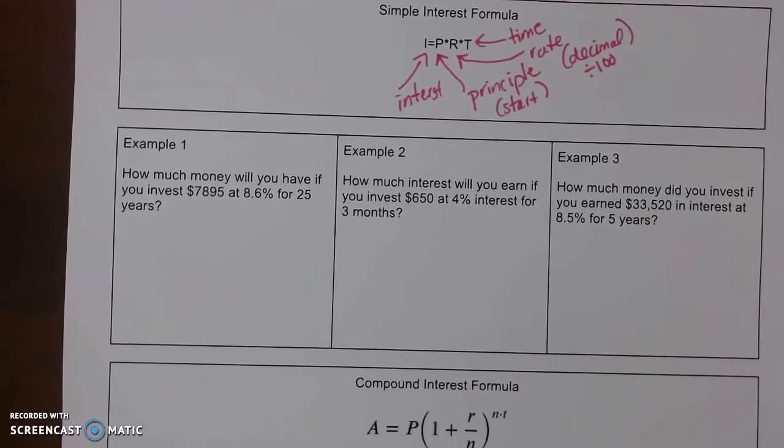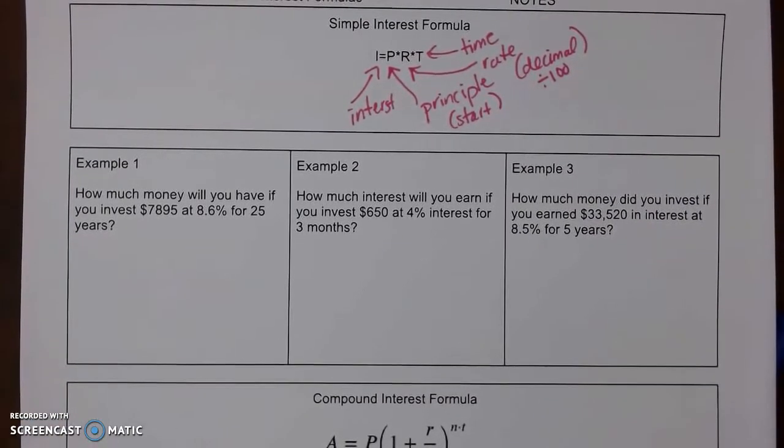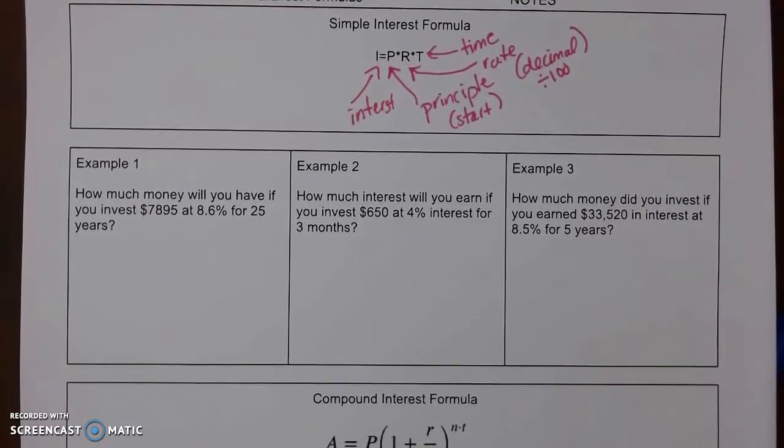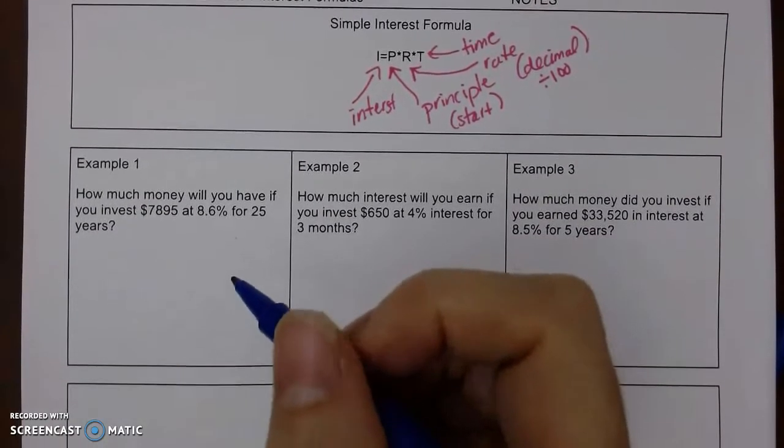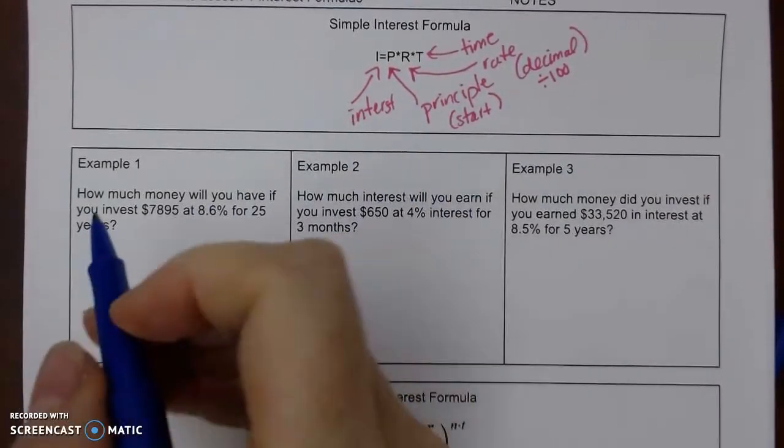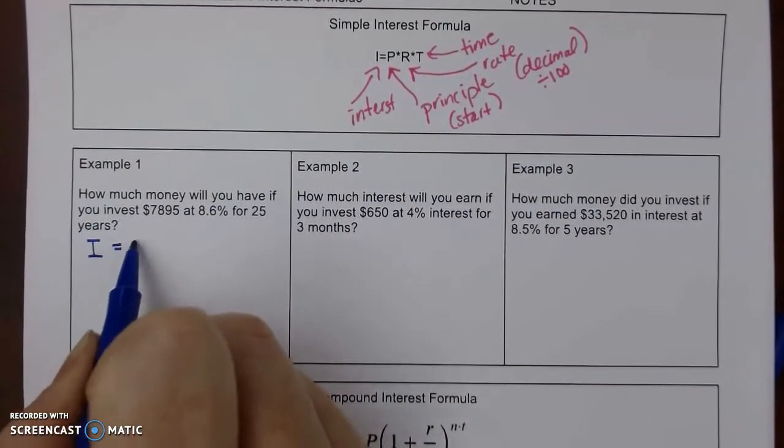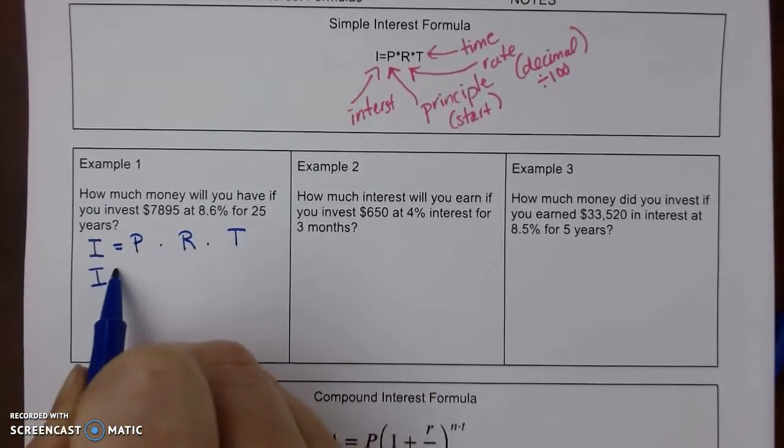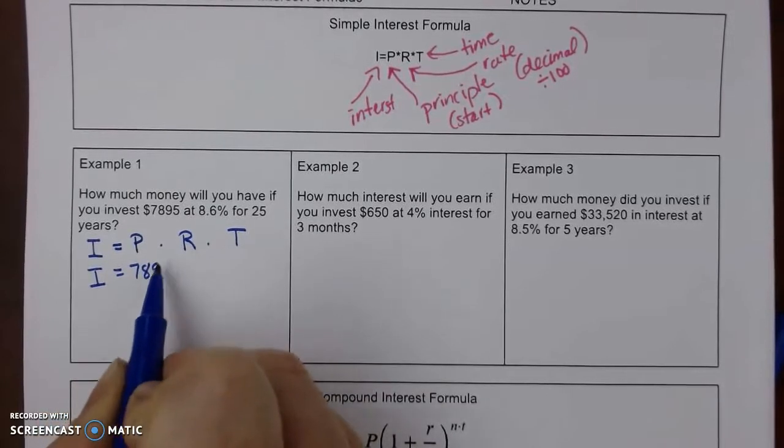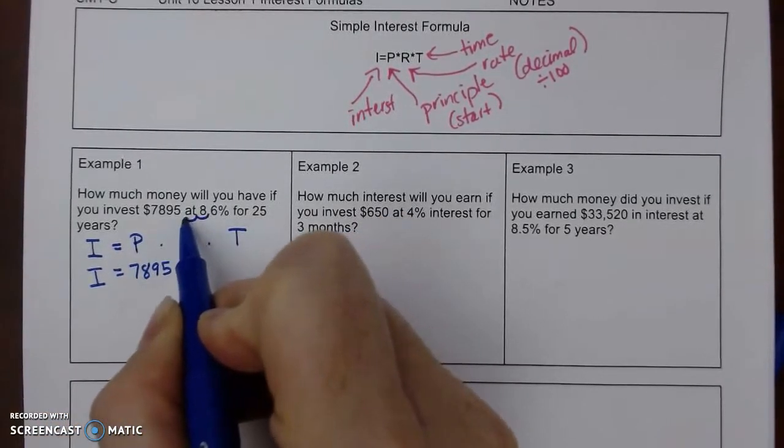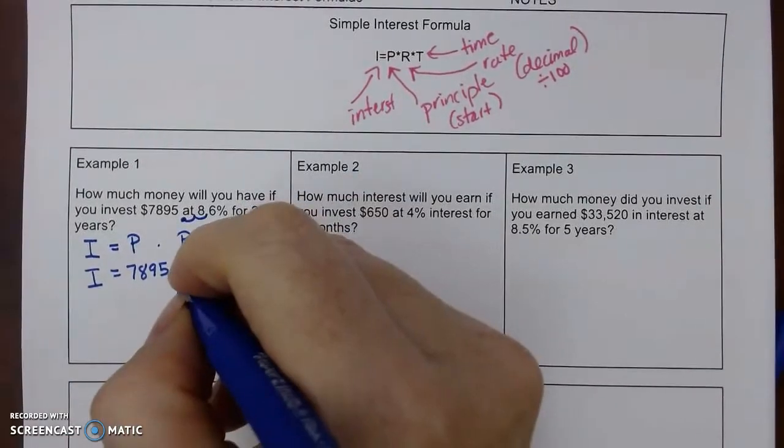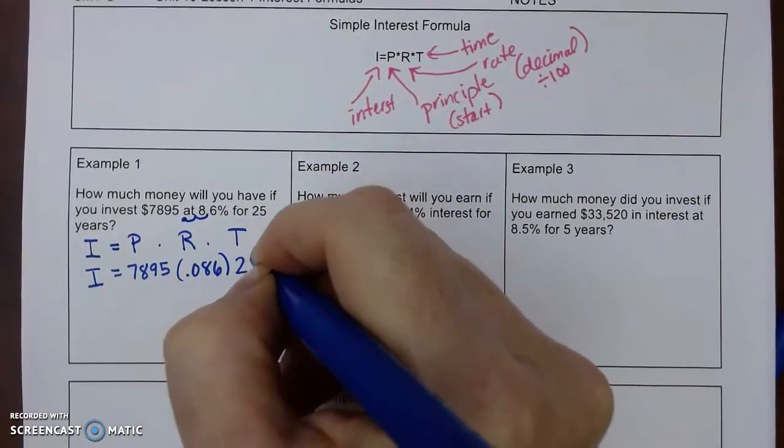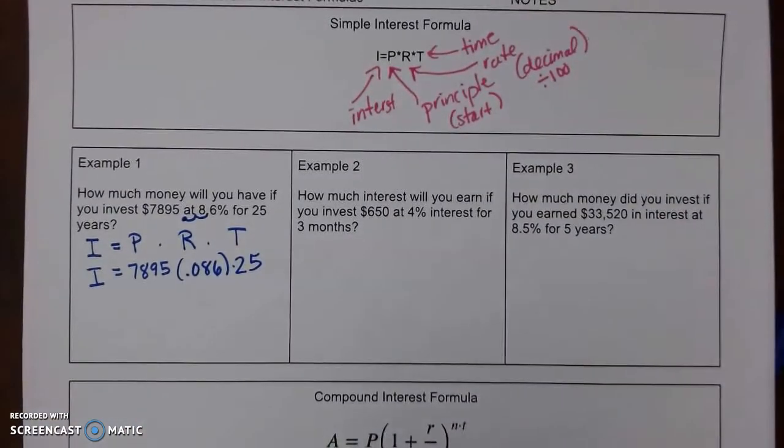So for example 1, it says how much money will we have if we invest $78.95 at 8.6% for 25 years? Alright, so our interest is P times R times T. So our principal is $78.95. We're going to divide this by 100 or move our decimal 2 to the left, so 0.086, and our increment is 25 years. So we are going to multiply those all out.